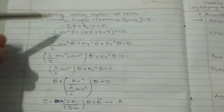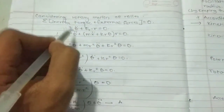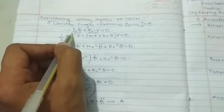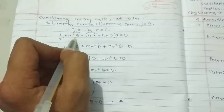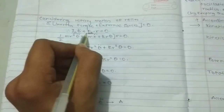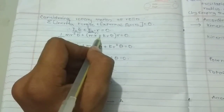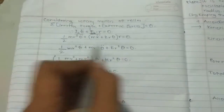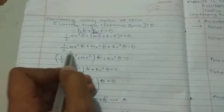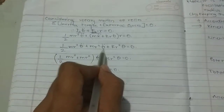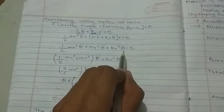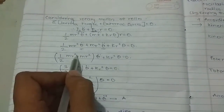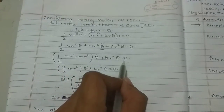Now considering the rotary motion of the roller: summation of inertia torque plus external forces. We have the inertia torque, and in external forces we have the frictional force into radius equals zero. The inertia term is (1/2)*m*r²*theta-double-dot, and we substitute the value of frictional force as m*x-double-dot plus k*r*theta equals zero. Taking theta-double-dot common, we get (1/2)*m*r² plus m*r²*theta equals zero.